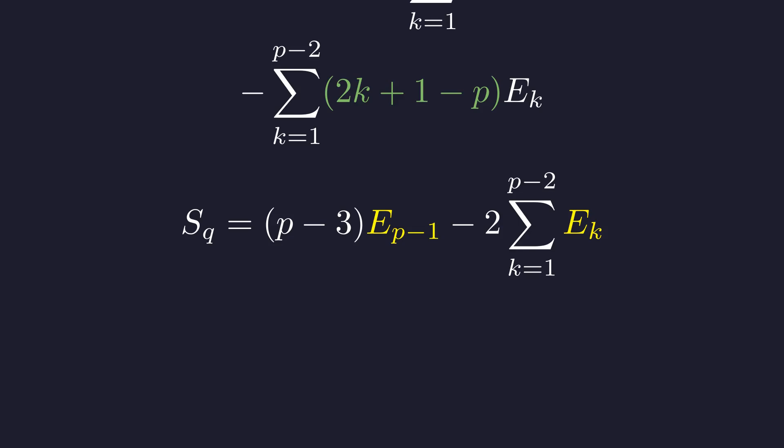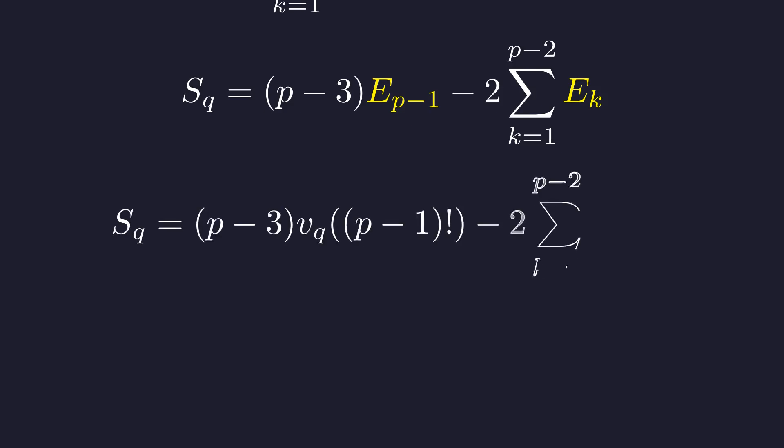Now let's unpack what these E terms actually mean by substituting back the definition. So our mission has crystallized: prove that this expression is always non-negative. If we can do that, we'll have shown that Q(p) is indeed an integer.